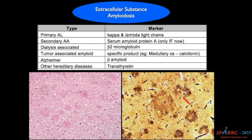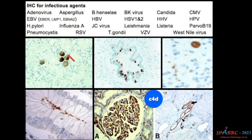A quick note on extracellular substrates: you can see eosinophilic acellular material — this is amyloid. Beta-amyloid is seen in Alzheimer's disease. Types of amyloid differ depending on the antigen origin. Regarding infectious agent markers: there are IHC markers for H. pylori, CMV, BK virus, and adenovirus. Importantly, C4D should be highlighted when discussing infectious agents because it comes into play in the post-transplant setting.